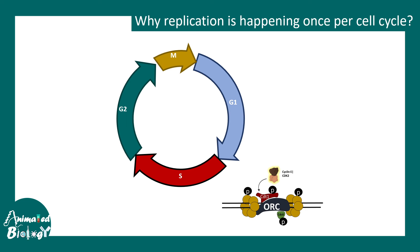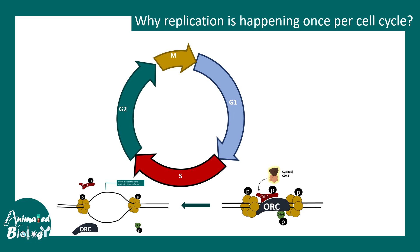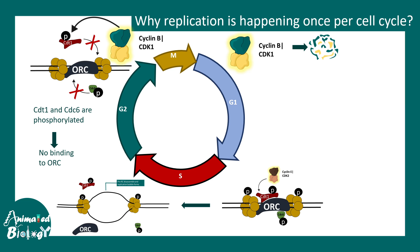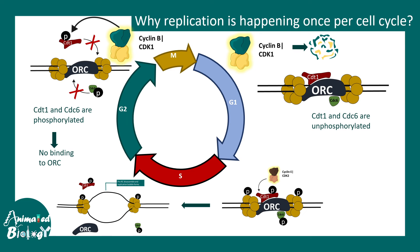It is important to note that the replication bubble forms at the beginning of S phase. In any other stage, since CDT1 and CDC6 become hyperphosphorylated, they cannot reassemble into the replication complex. This ensures that replication only happens once per cell cycle and never twice — a major achievement of the cyclin-CDK complex in eukaryotic cells. The cyclin E-CDK2 complex therefore has a huge contribution to replication initiation.